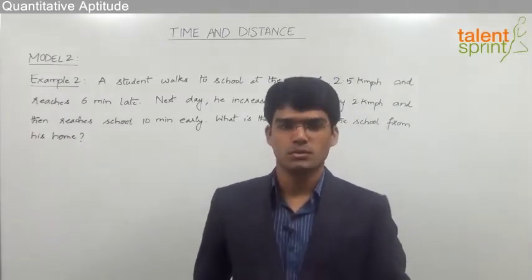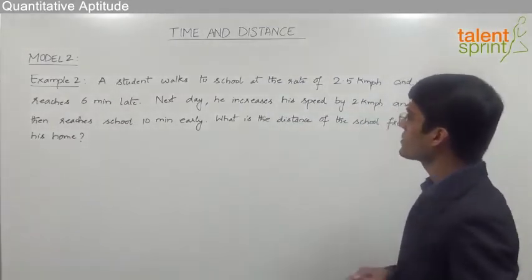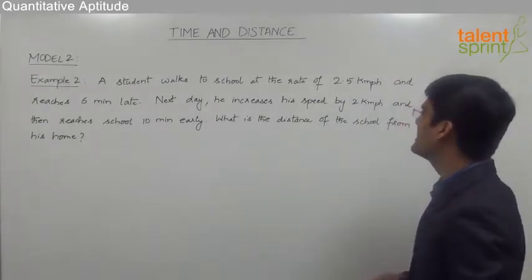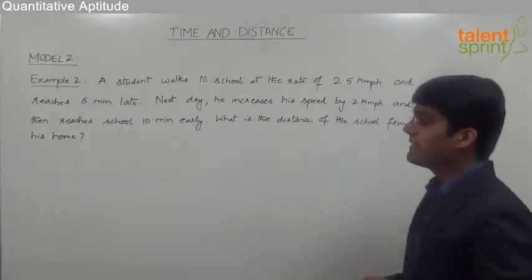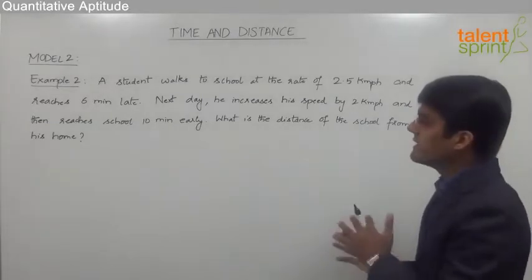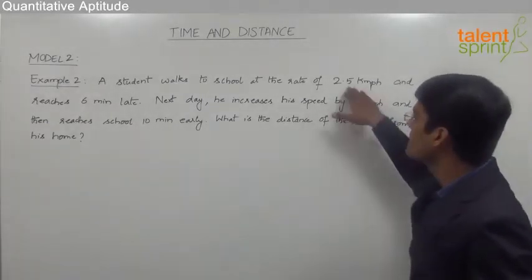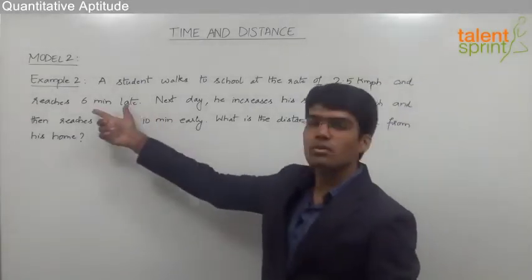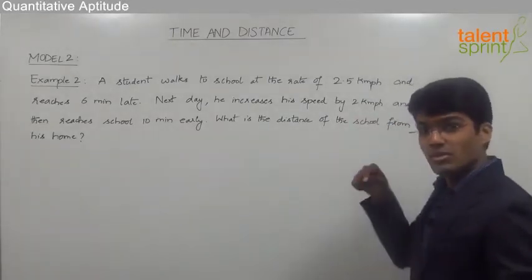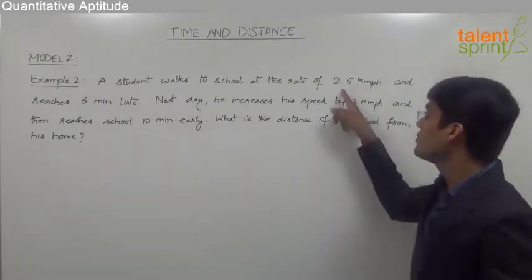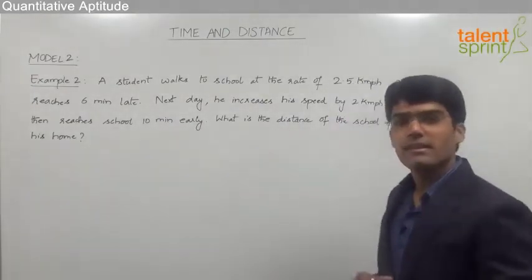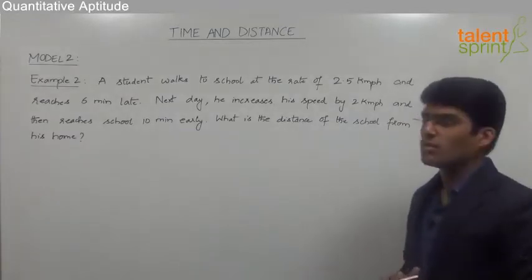Let us now take the second example from model two. A student walks to school at the rate of 2.5 kilometers per hour and reaches six minutes late. The next day, he increases his speed by 2 kilometers per hour — making his new speed 4.5 kilometers per hour — and reaches school 10 minutes early. We are supposed to find out the distance of the school from his home.